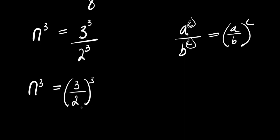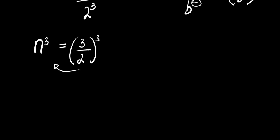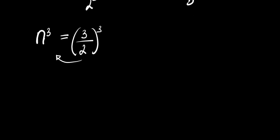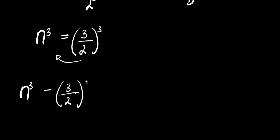The next step is to move the right side over and equate everything to zero. We have n³ minus (3/2)³ equals 0.